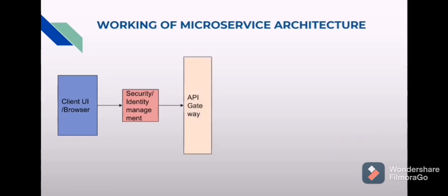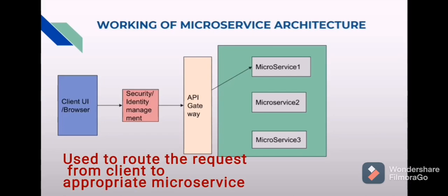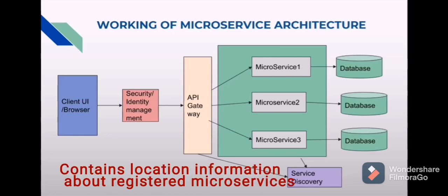Then we have the API gateway — this is a module of microservice. Since our application is divided into many microservices, the client will hit this API gateway, and the API gateway in turn will route that client to the correct microservice. Each of these microservices will have some databases attached to them. Also there is something called service discovery, to which all the microservices get registered, and it contains the IP address and port number of these microservices, so it will be easy for microservices to communicate with each other without hard-coding the IP address and port number.